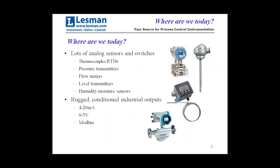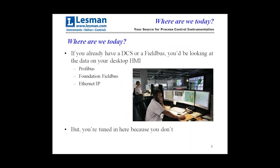Thank you, Mike. Let's get going here today and take a look at where we are in this process sensor getting data on the desktop world. We have lots of analog sensors and switches out there — temperature, pressure, flow, level, humidity, and so on. They all come out with these conditioned industrial outputs, which are really rugged because they've been used for 50 years now: 4 to 20 milliamps, 3 to 5 volt, Modbus, that kind of thing.